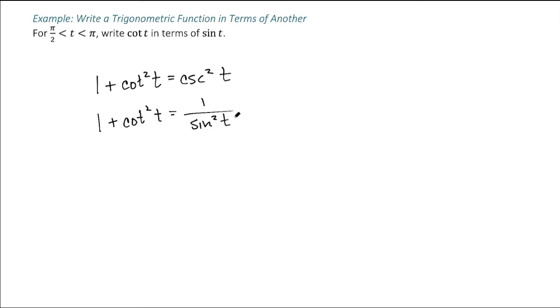Now I can just solve for cotangent of t because I've got a relationship between them. I'm going to subtract 1 from both sides. I get cotangent squared of t is equal to 1 over sine squared of t minus 1.